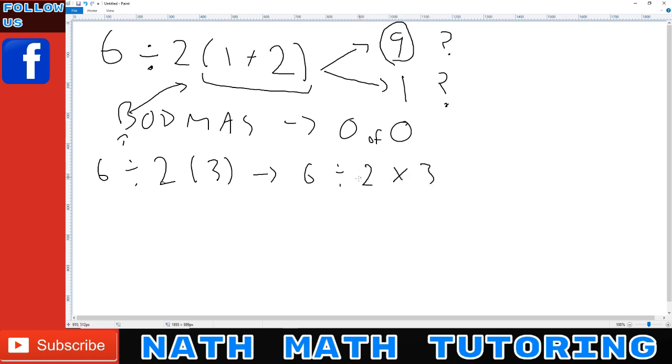You can't just decide to put brackets around here and do 2 times 3. Those brackets aren't there. So you must do 6 divided by 2 first before you can do the times 3, which means this would become 3 times 3 equals 9.